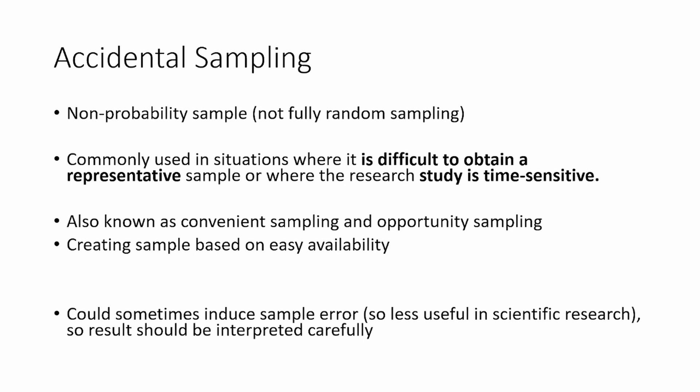But this could be a problem because it could induce sampling error, so the results coming out of accidental research and accidental samples may not be unbiased, may not be quite good. It should therefore be interpreted very carefully, and there must be a disclaimer in place for people to understand — otherwise it could be taken out of context. It is therefore less useful in scientific research.